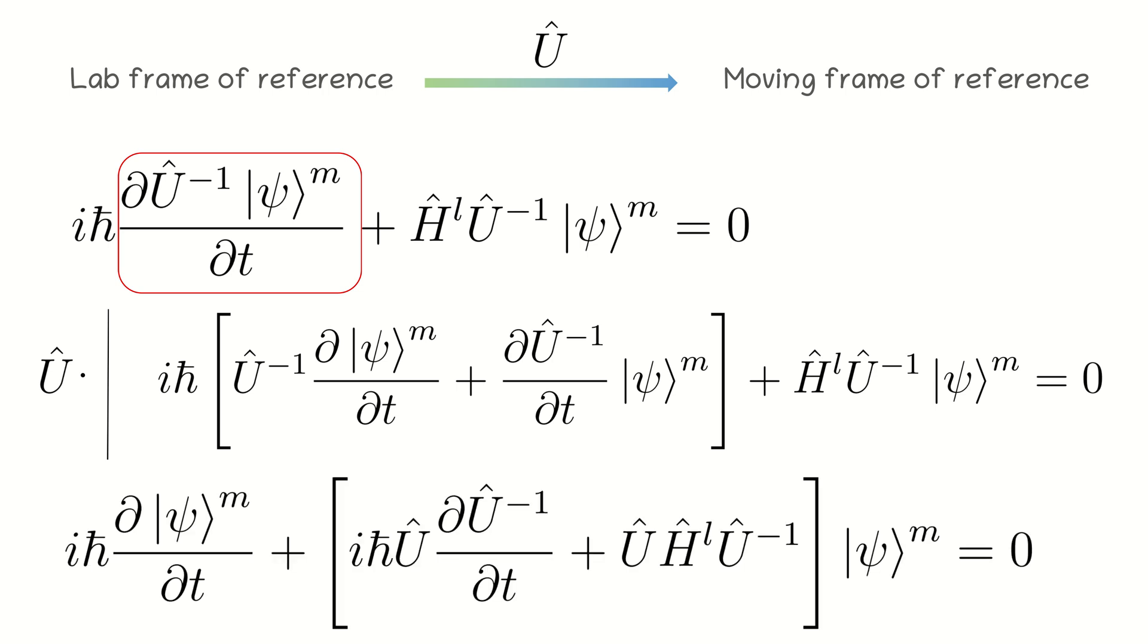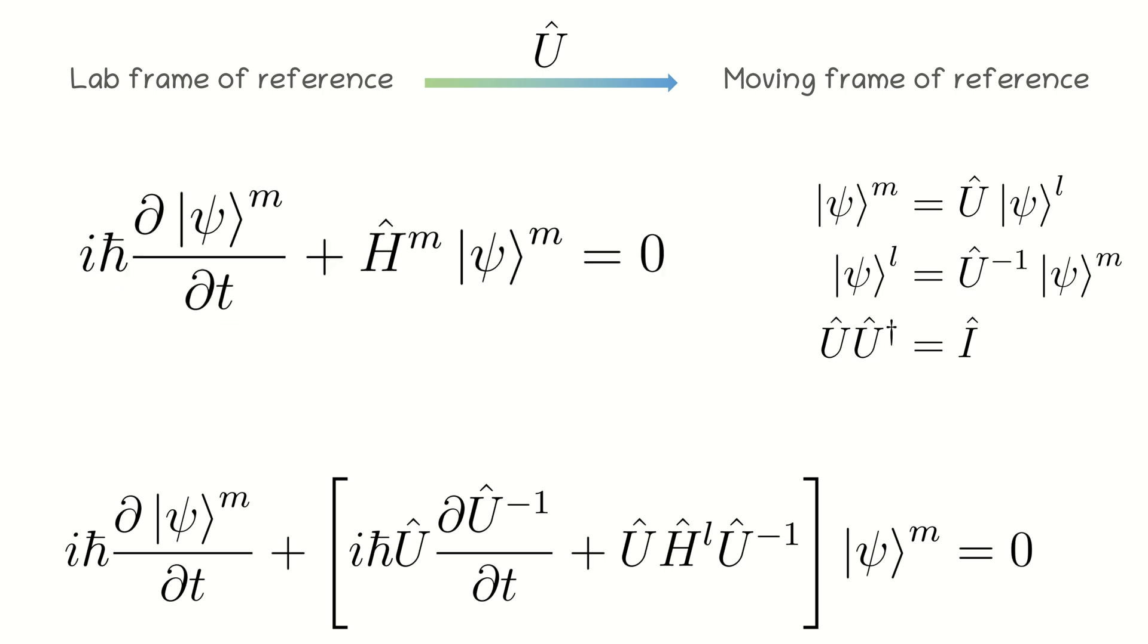Using the fact that the evolution operator is unitary and grouping the terms, we obtain the following equation. Now, if we compare it with the Schrödinger equation for the moving frame of reference, we find the expression for Hamiltonian in a moving frame of reference.